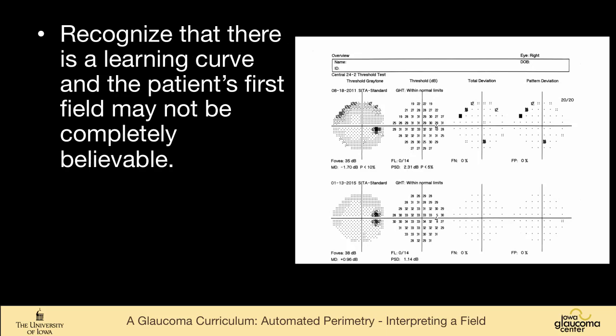Recognize first that there's a learning curve and the patient's first field may not be completely reliable or believable. This is a subtle example. You can see the top field here has a little bit of scattered defects in both the total and the pattern deviation here. The hemifield test is not fooled. It thinks this is a normal field. But when you repeat the field, you can see that the performance is much better and the quality of the field is excellent, completely normal.